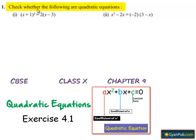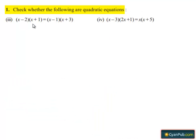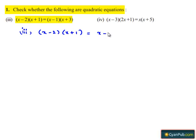Coming to the first problem, check whether the following are quadratic equations. Now coming to the third part, which is x minus 2 times of x plus 1 is equal to x minus 1 times of x plus 3.